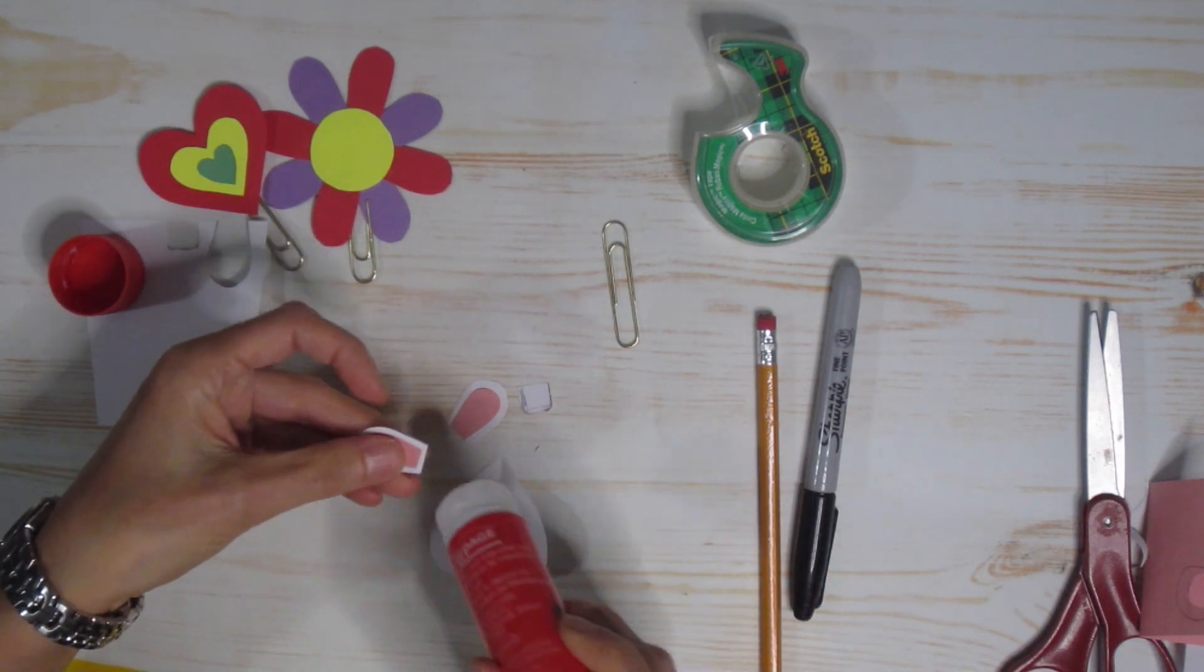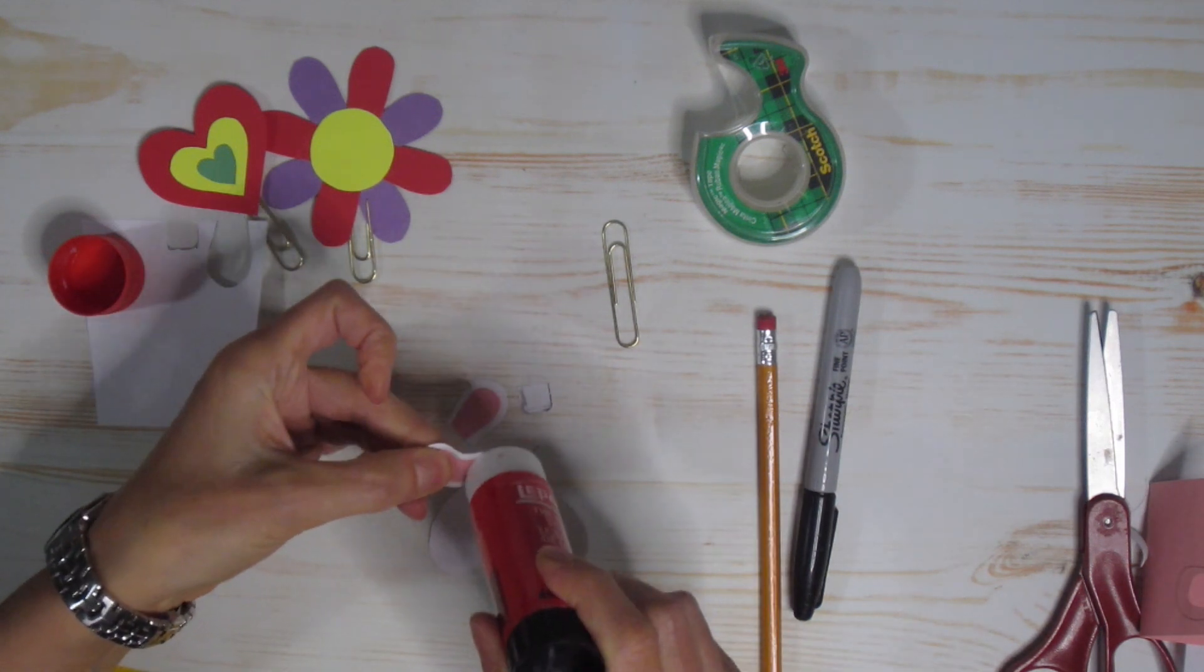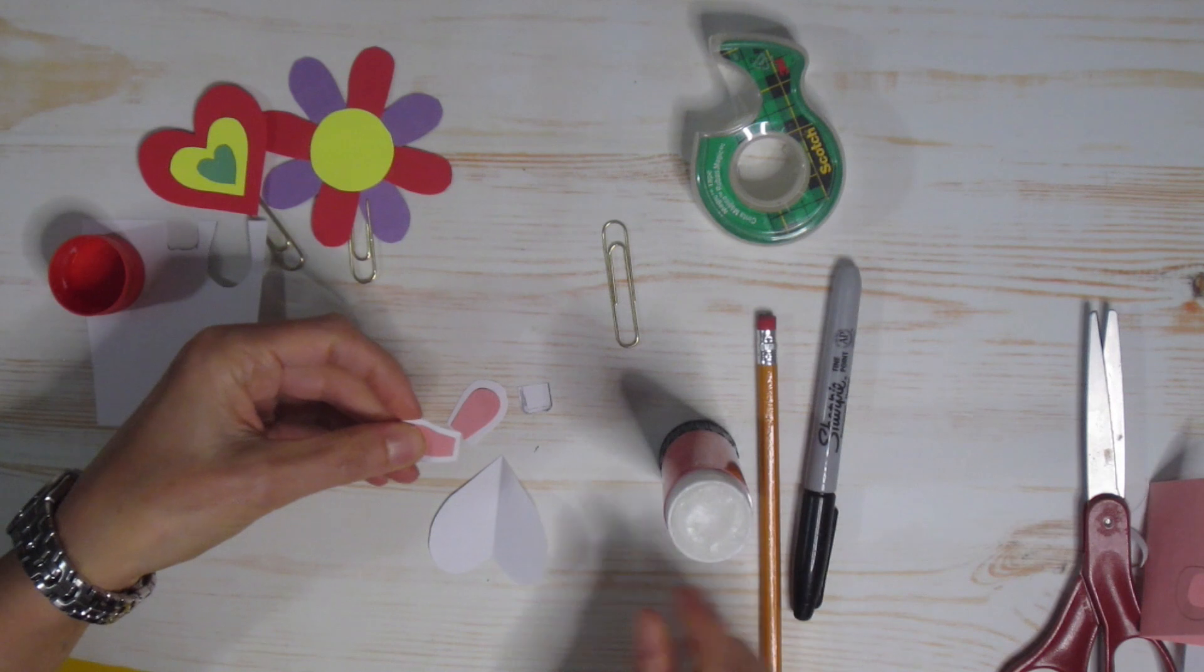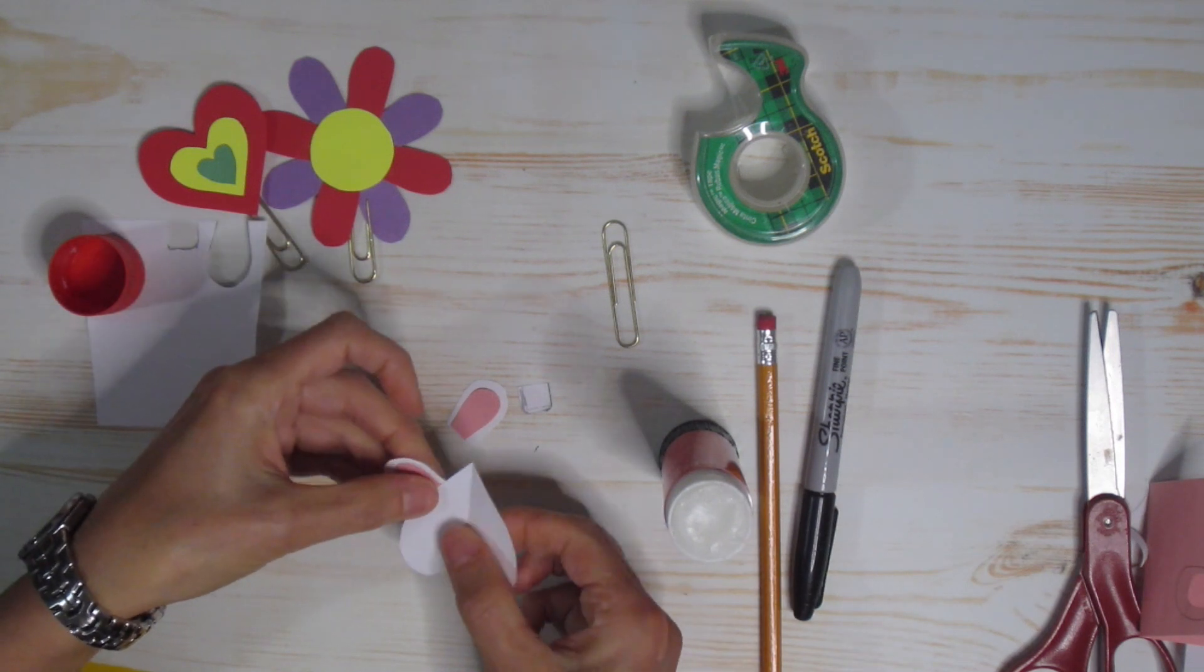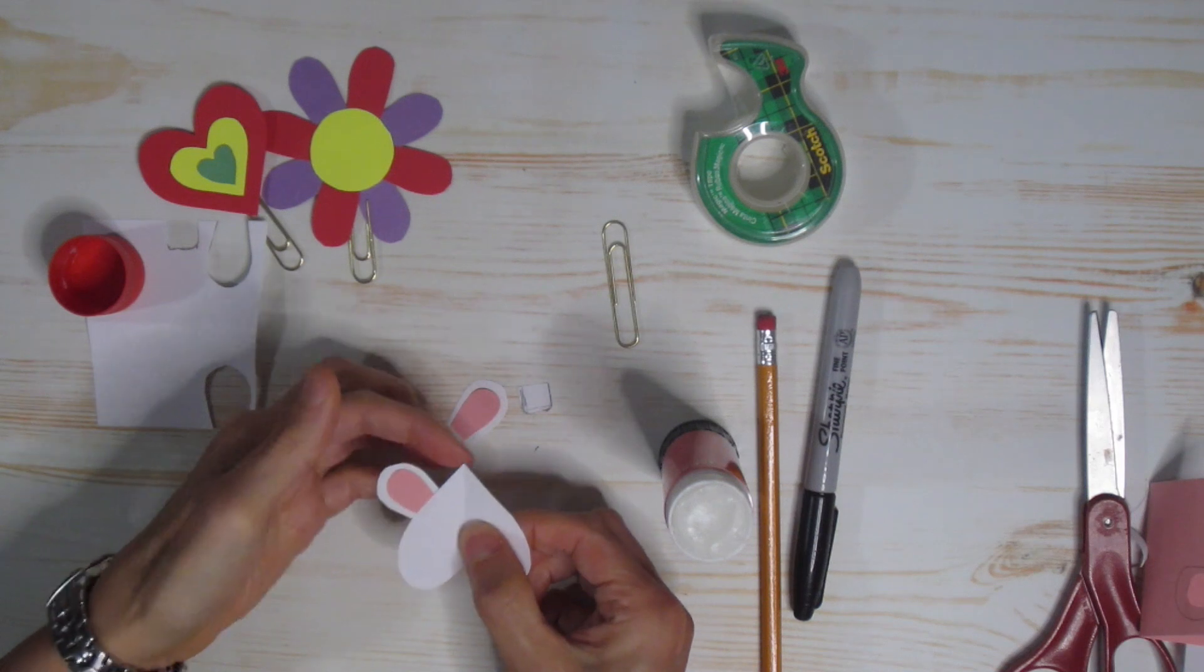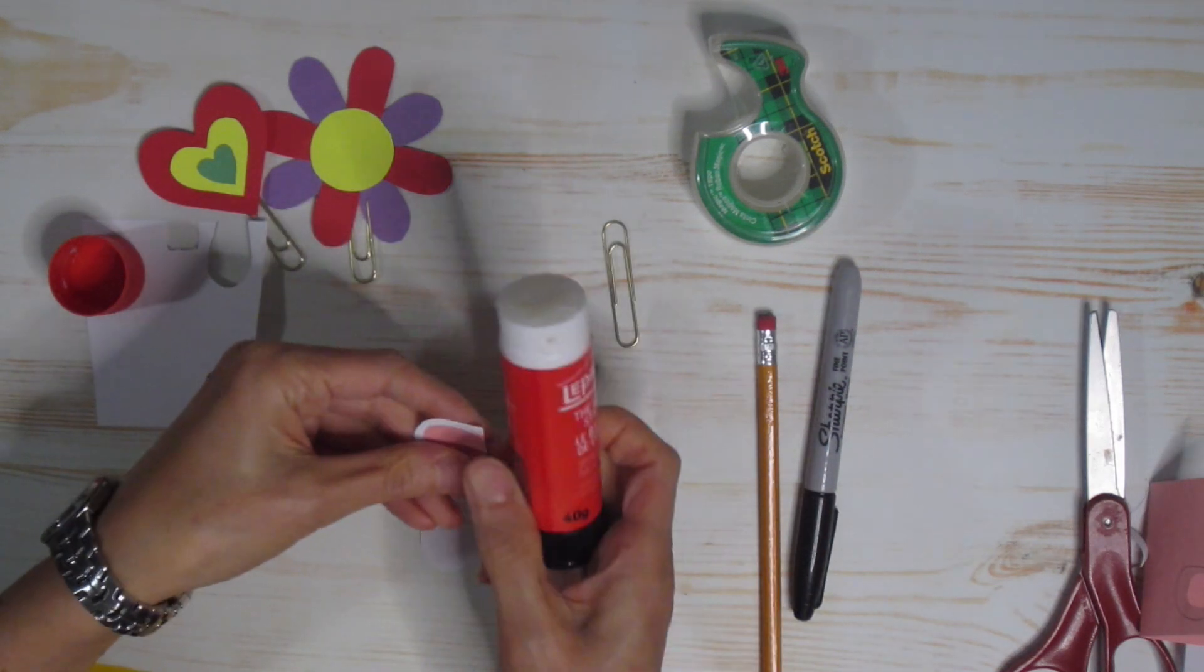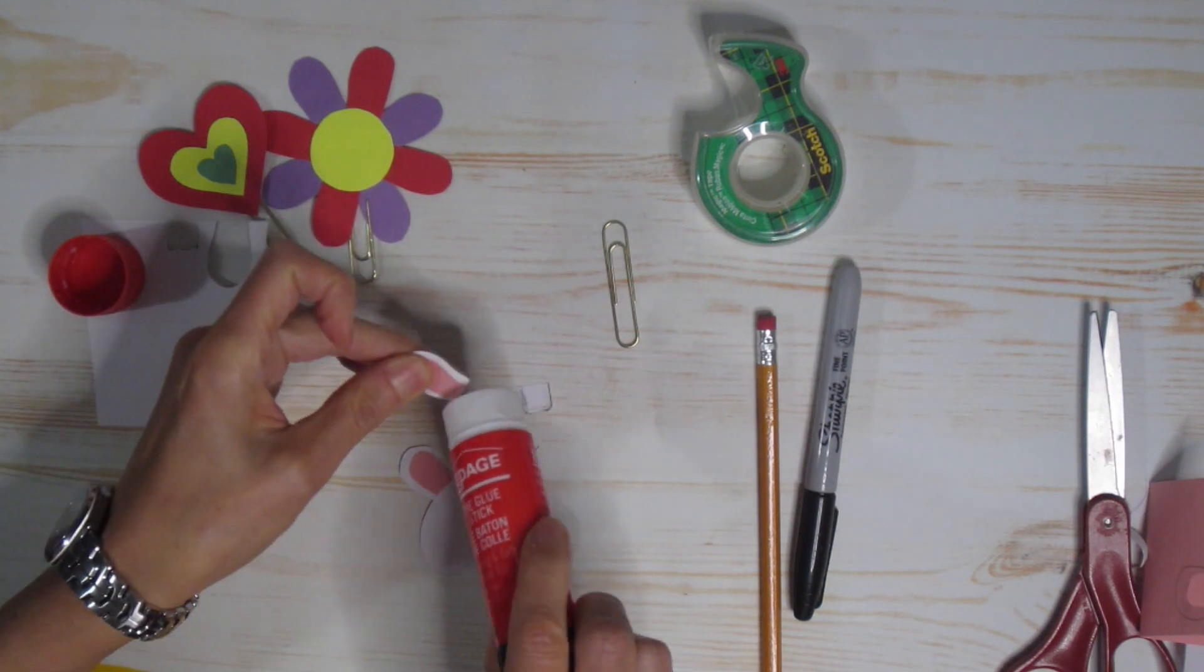Then when I'm gluing those ears, I just put a little bit of glue right on the flat part of the ear, right at the bottom here. And I'm gluing it behind my heart. Now remember the heart is upside down. So the little pointy thing is at the top. I just leave a little bit of space and I glue one ear on that side. And I glue one ear on this side.